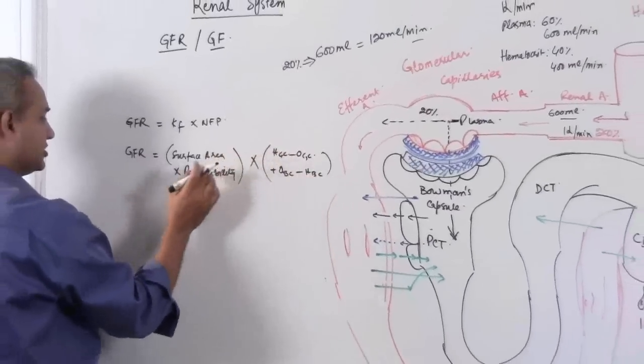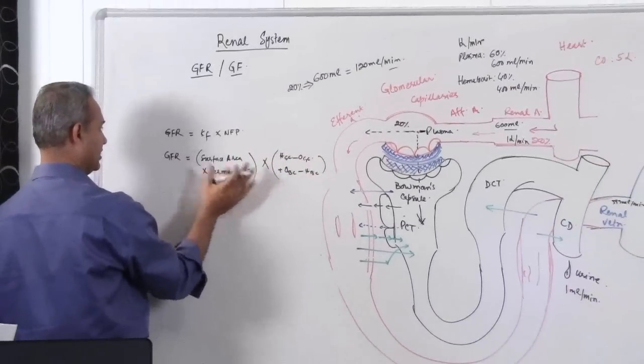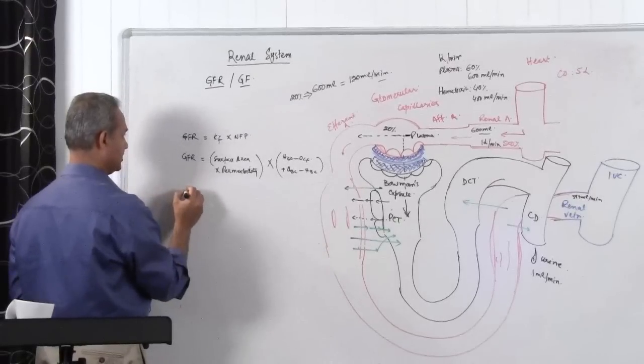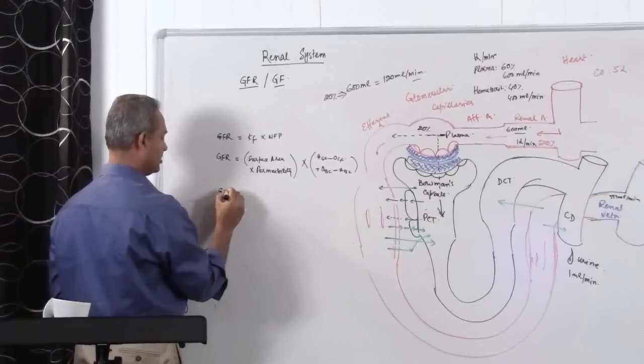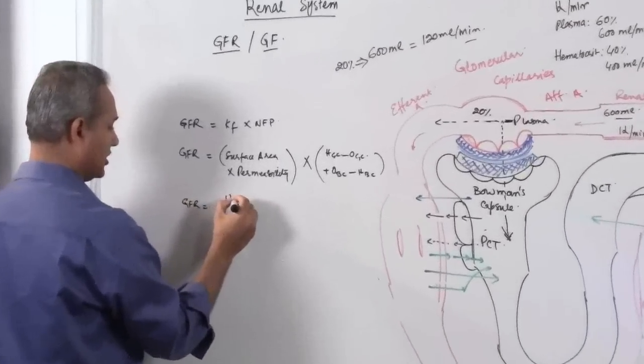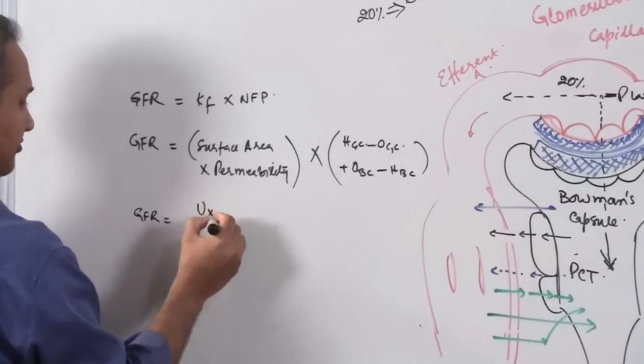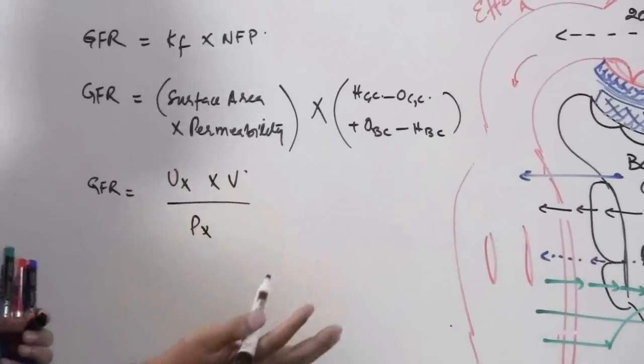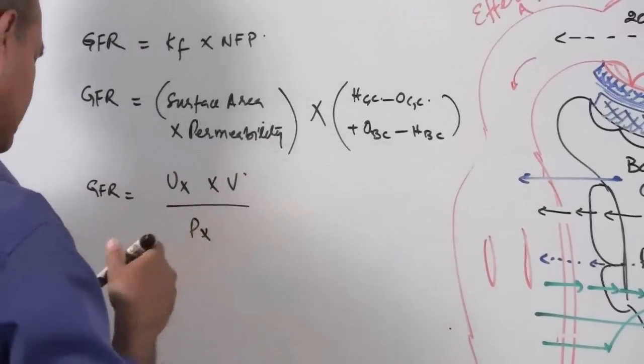So we use these all, we create this summation, we do this product and then we multiply them and that is the GFR. So that is one formula which is derived from here. Then there is another formula which says GFR equals urinary concentration of X multiplied by the volume divided by the plasma concentration of X of a substance. That is also GFR.